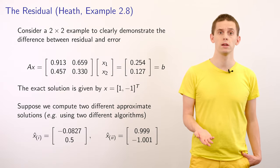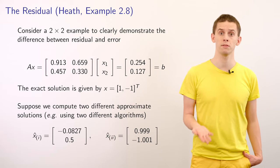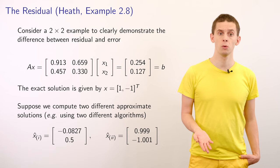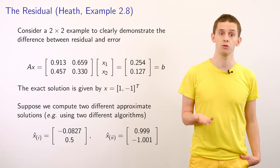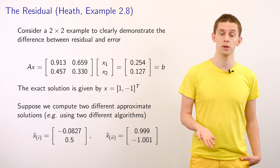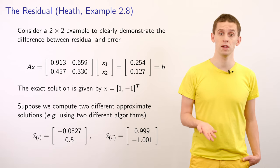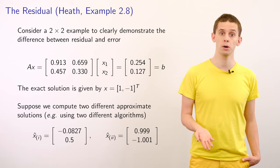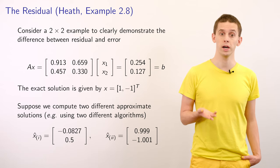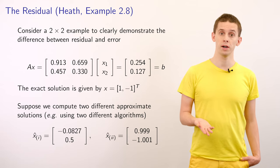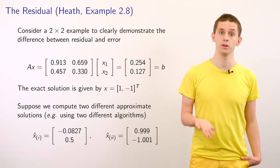To illustrate this inequality, let's look at example 2.8 taken from Michael Heath's textbook on scientific computing. So if we look at a problem Ax = b and we define our matrix A here to have entries of 0.913, 0.659, 0.457 and 0.330 and our vector b to have entries of 0.254 and 0.127. And you can verify that for this matrix problem the exact solution is given by 1, minus 1.